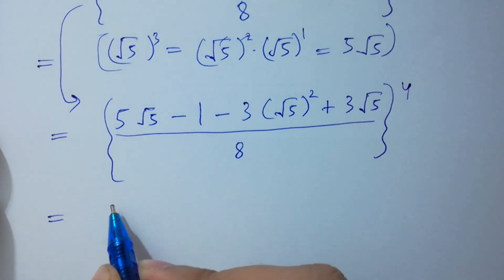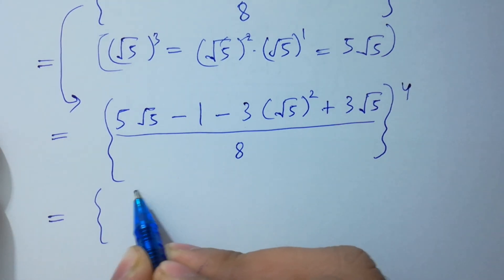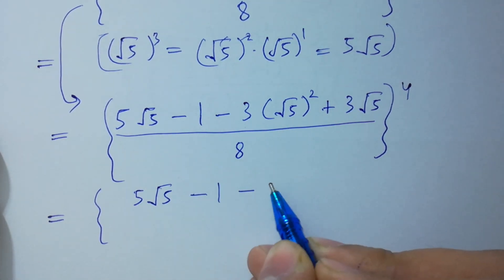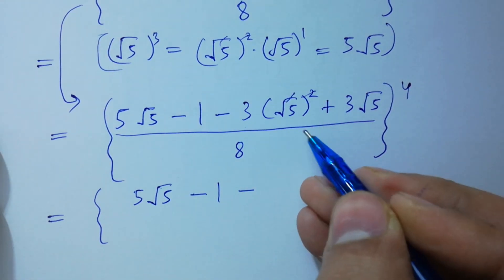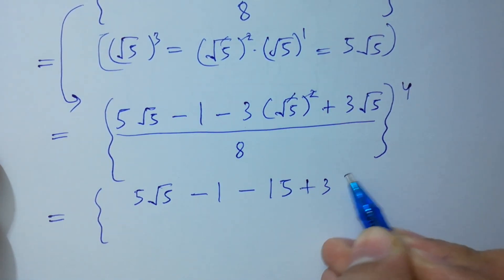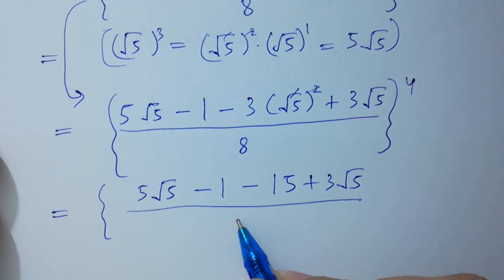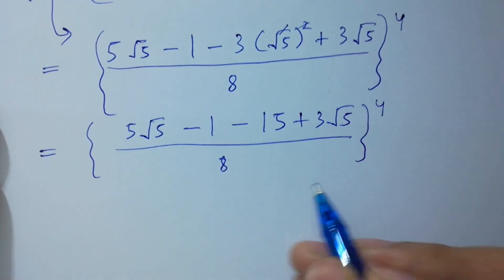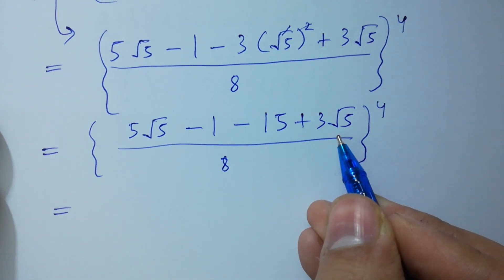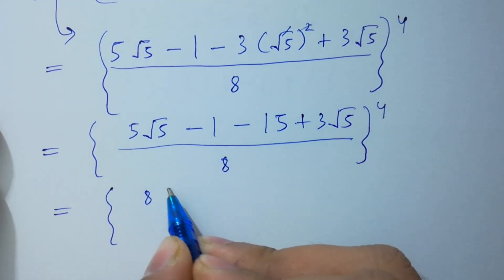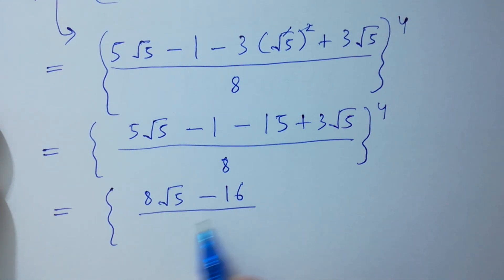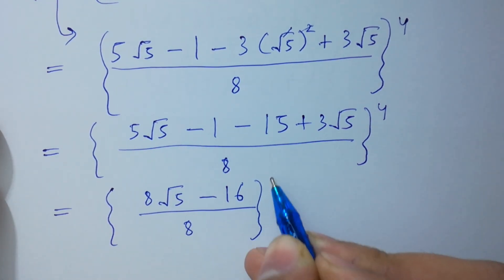Next: 5√5 plus 3√5 equals 8√5, and minus 1 minus 15 gives minus 16, over 8, to the whole power 4. Here 8 is common: we have 8(√5 minus 2), over 8, to the whole power 4; 8 and 8 cancel, giving square root of 5 minus 2, to the whole power 4.